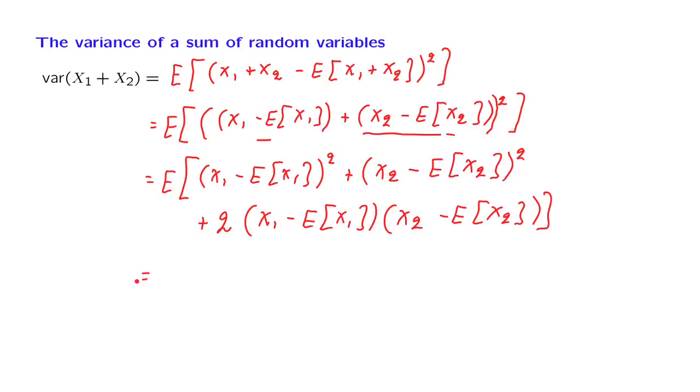And what do we have here? The expected value of the first term is just the variance of x1. The expected value of this second term is just the variance of x2.